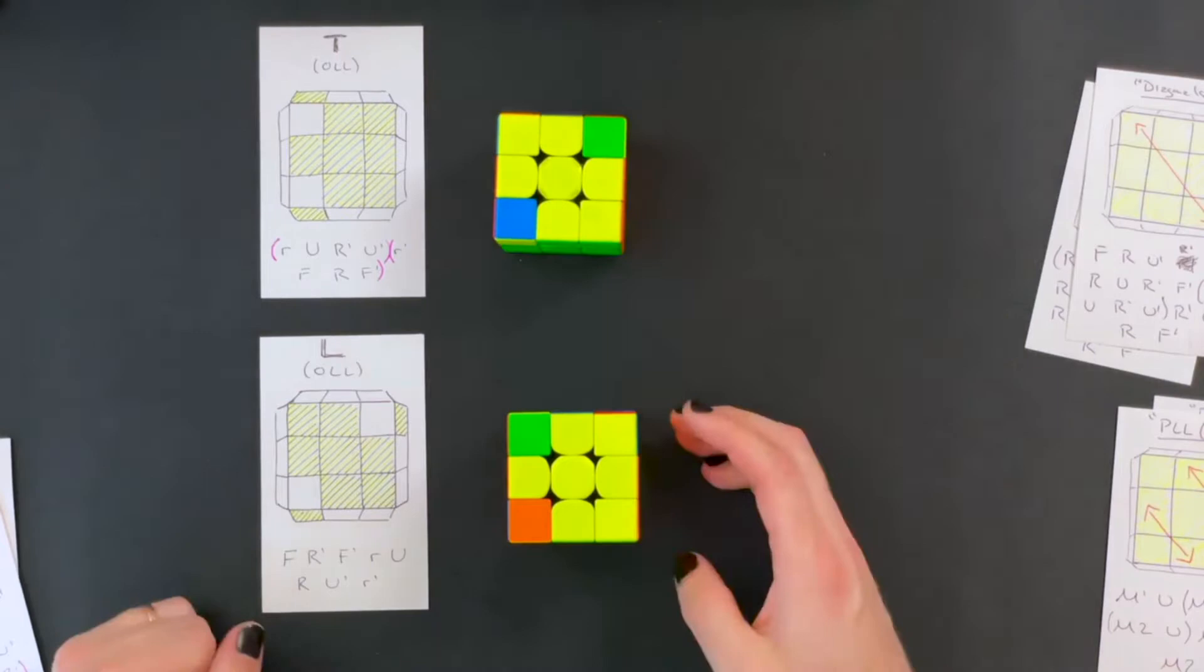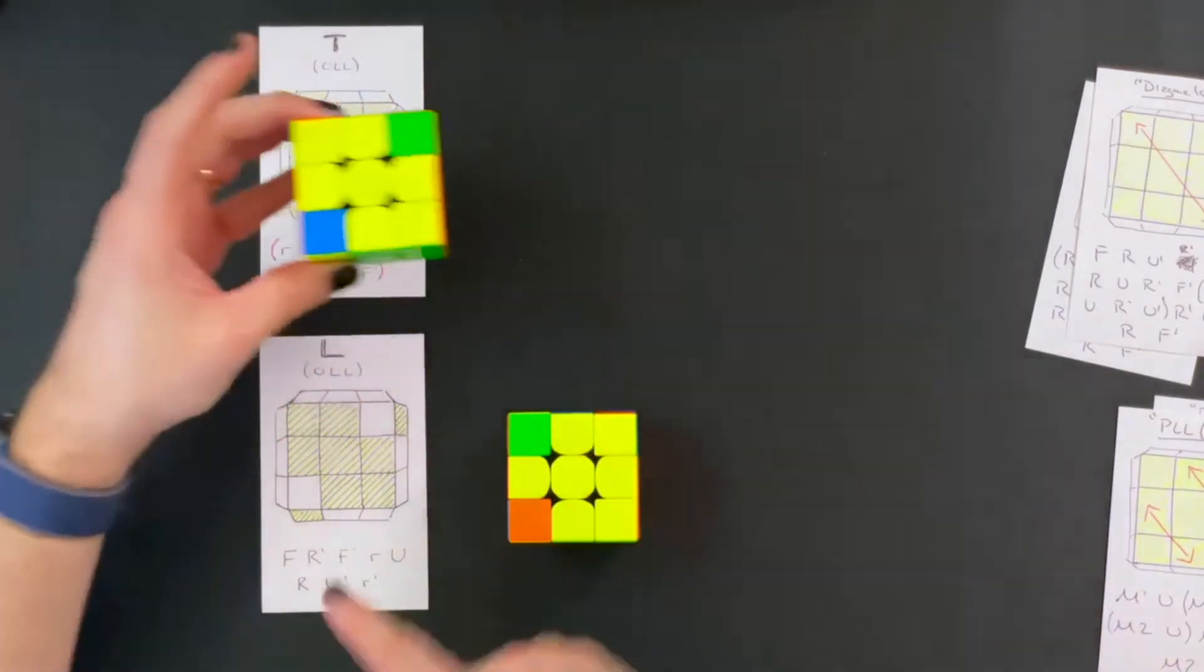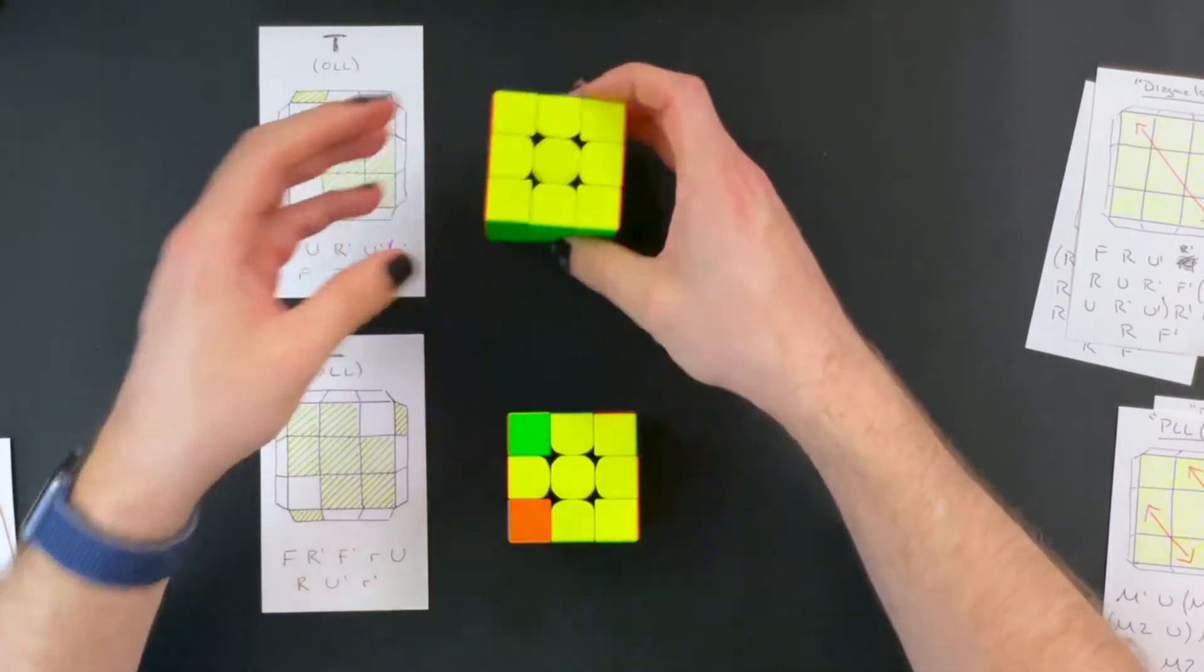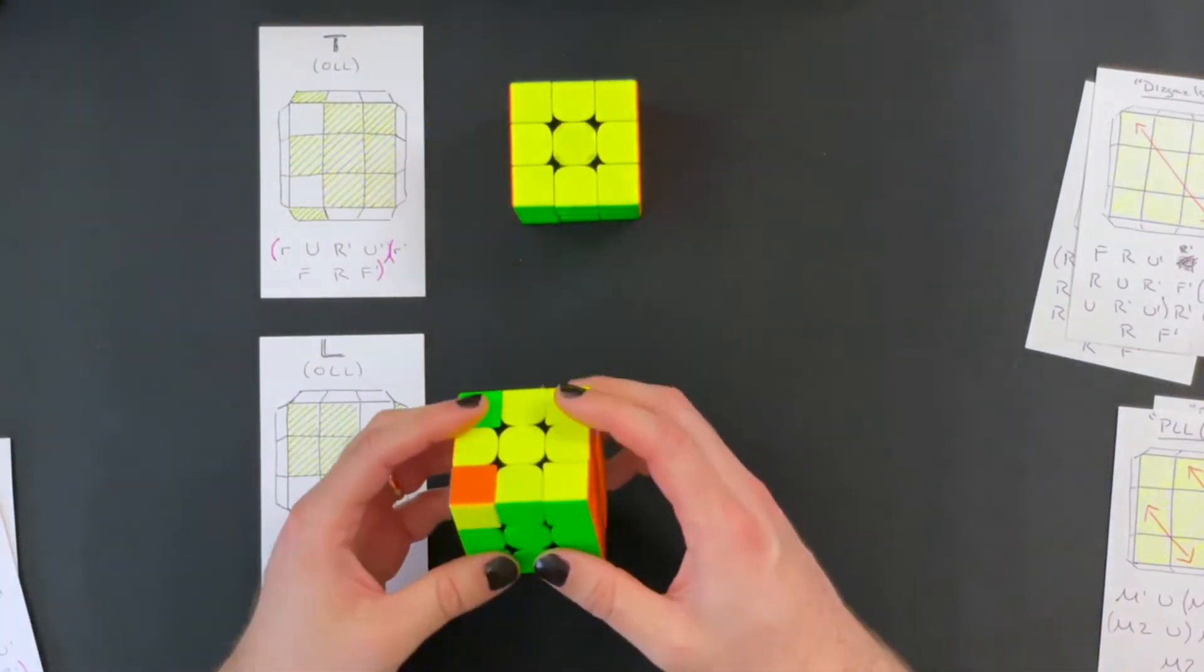Similar to sune and anti-sune the top one is T algorithm that leads to L and the bottom was the L algorithm that leads to T and then to solve the cube again I do the inverse.